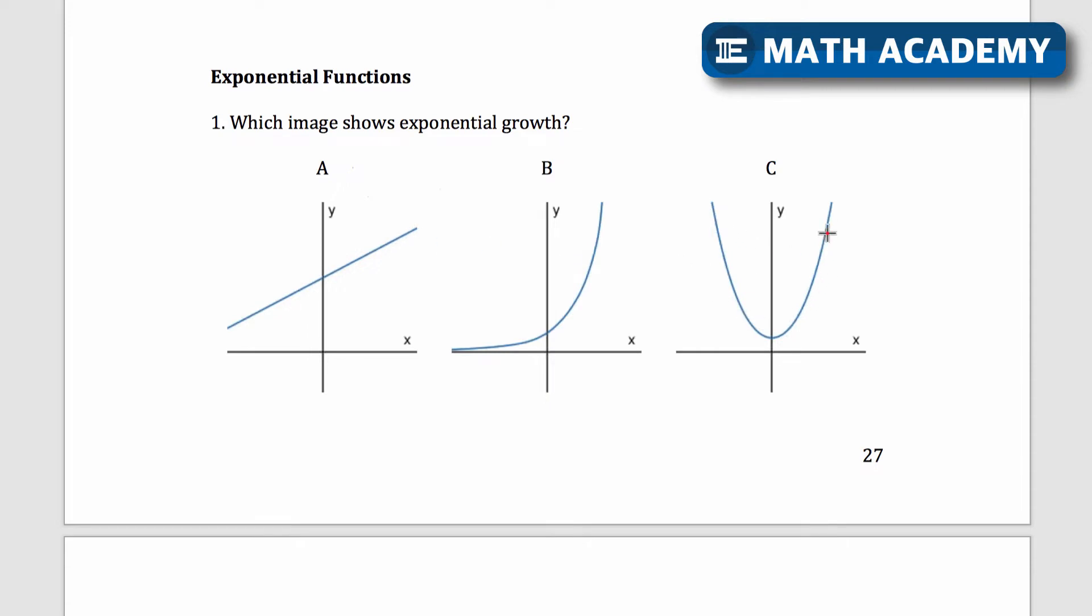This is going to be a quadratic function. It's got the shape of a parabola. An exponential function would be flat on one side and get really steep on the other side. So it's going to be B here. This shows exponential growth, growth meaning that it increases as you go to the right.